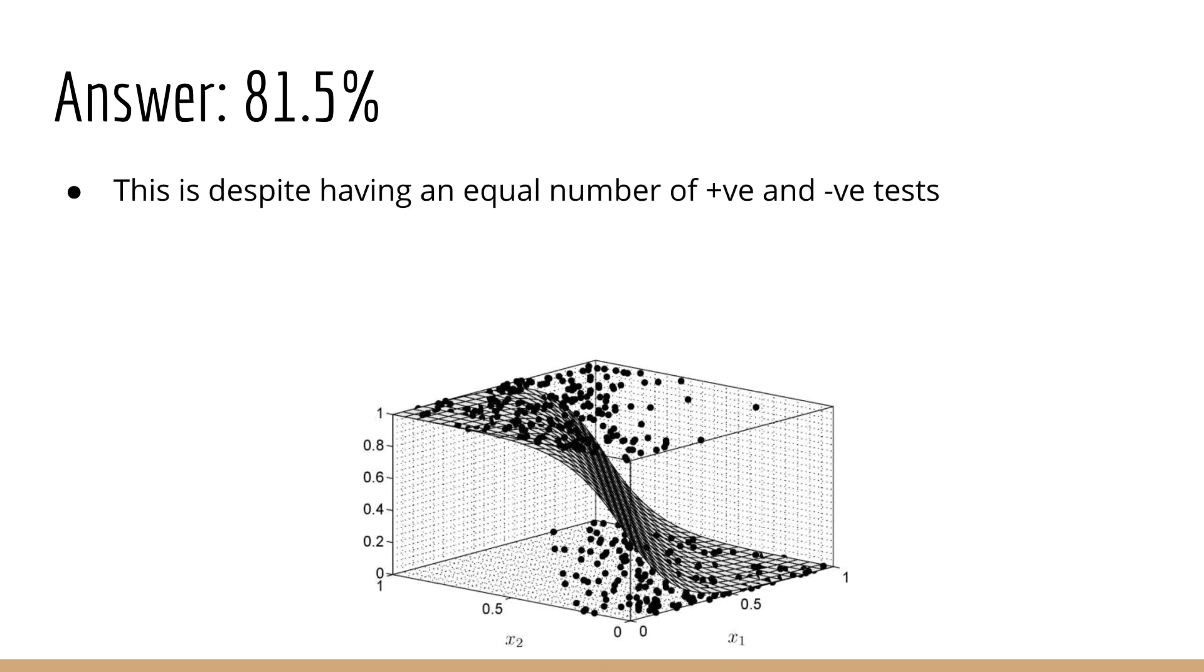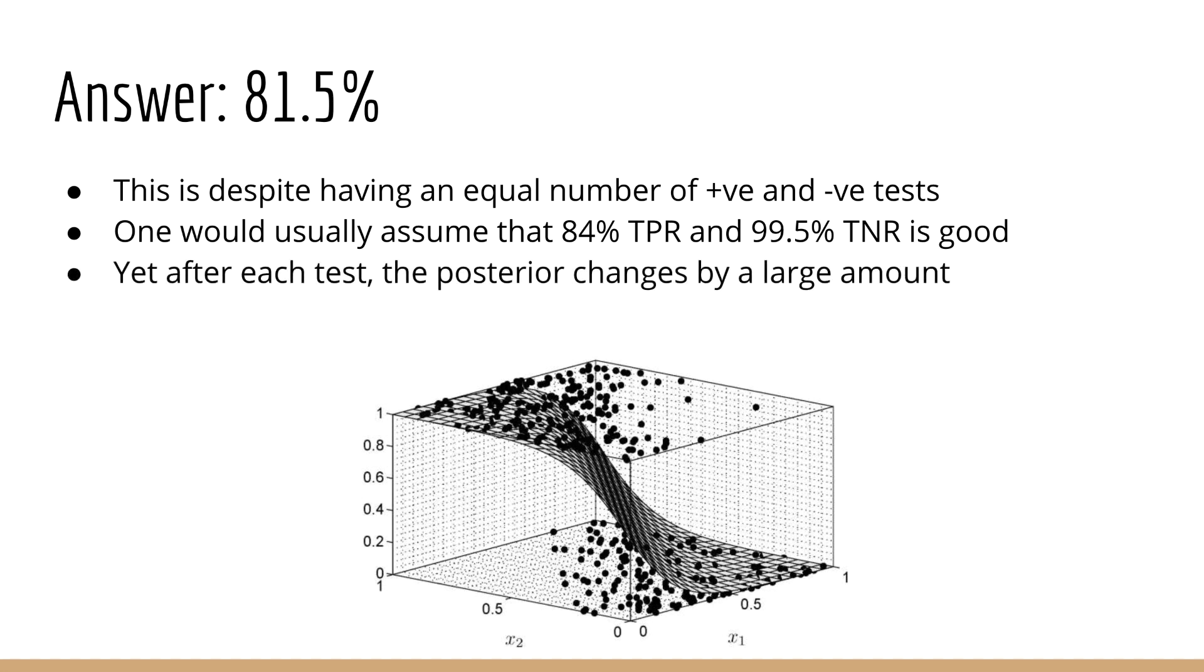So this is an interesting lesson in model accuracy. Typically, one would assume that a sensitivity of 84% and a specificity of 99.5% is pretty high. Building a classifier with an accuracy, at least in the 80s, can be considered decent, depending on what data you're working with. And yet, even with such high accuracy, we can see that, after each test, the posterior probability changes by a very large amount. From the third test to the fourth test, we go from very confident that Elon does not have the virus, to very confident that he does.